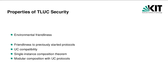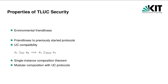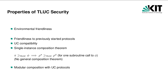As we have restricted the class of allowed environments and adversaries, we cannot hope for all properties of UC security to carry over. However, due to the fact that TLAC simulators run in polynomial time, we are able to achieve the important property of environmental friendliness. In addition, we can show a number of other properties like friendliness to previously started protocols due to uniform simulation. Moreover, TLAC security is compatible with UC security in the sense that UC-secure protocols are also TLAC-secure. Unfortunately, TLAC security is not closed under composition. Similar to SPS security, we can only show the single-instance composition theorem, which allows the replacement of one subroutine. In practice, this means we will manually have to show the concurrent self-composability of TLAC protocols, as we did with our composable commitment scheme.